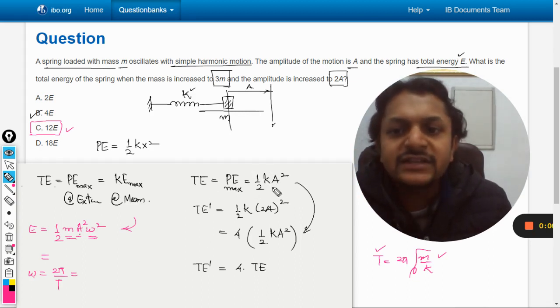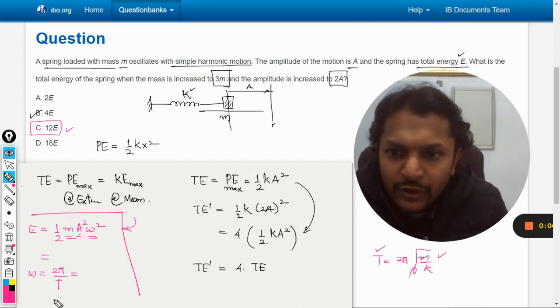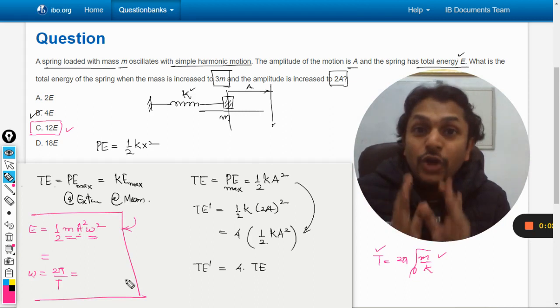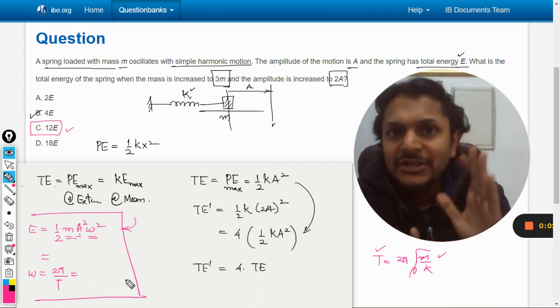That is why we have to go for the simple formula like this. So this formula we cannot use because omega is dependent on m. All the best.